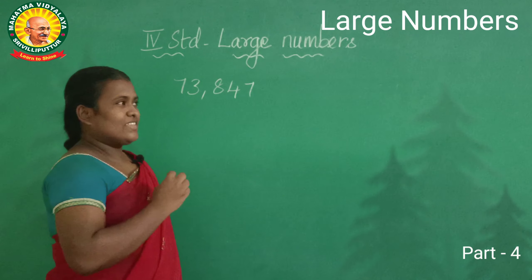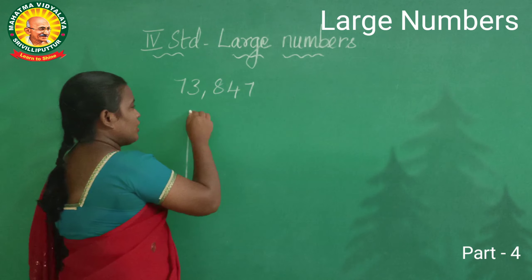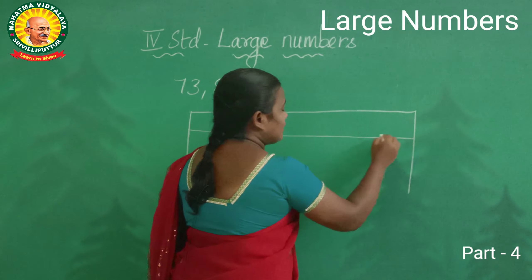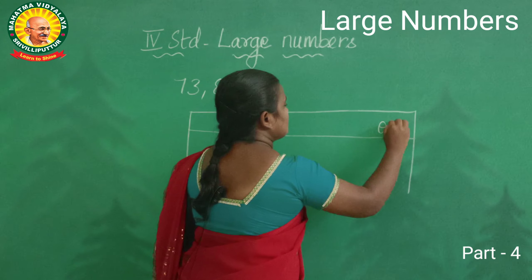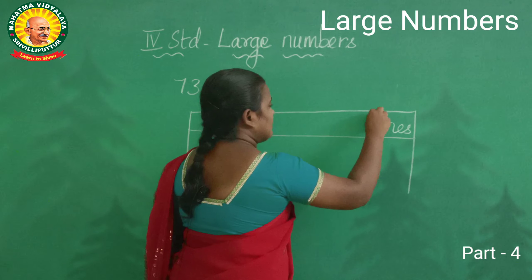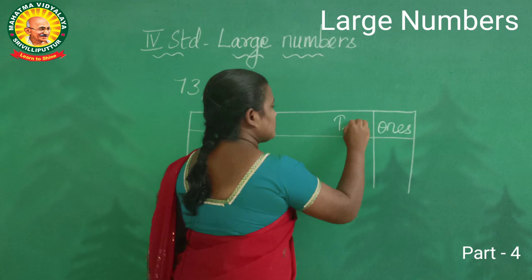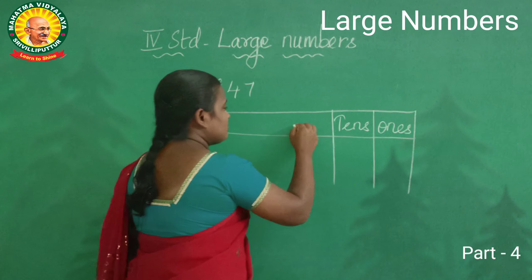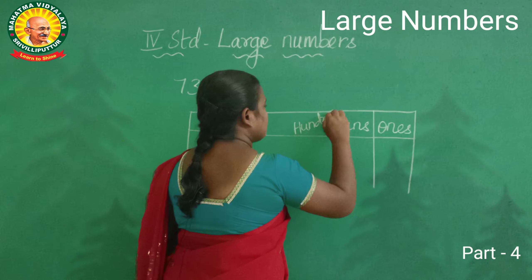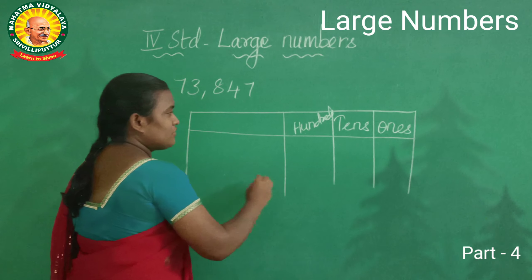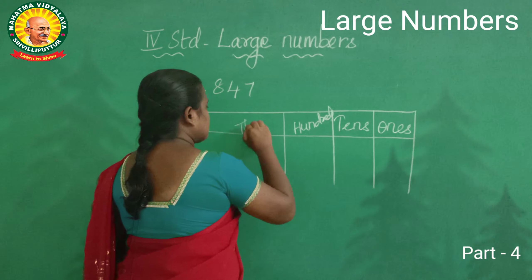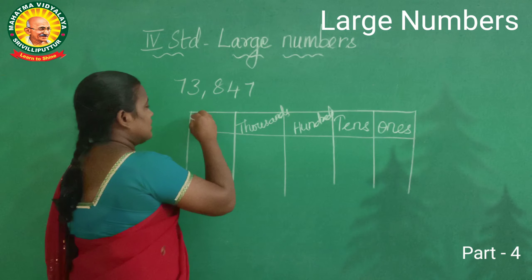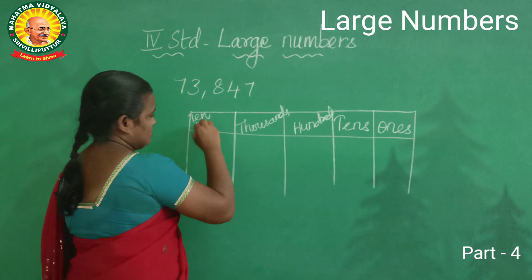Okay, first we have to draw a chart. First we have to write ones — very good. And next we have to write tens — super. And next we have to write hundreds — very good. And next we have to write thousands — very good. And next we have to write tens thousands.